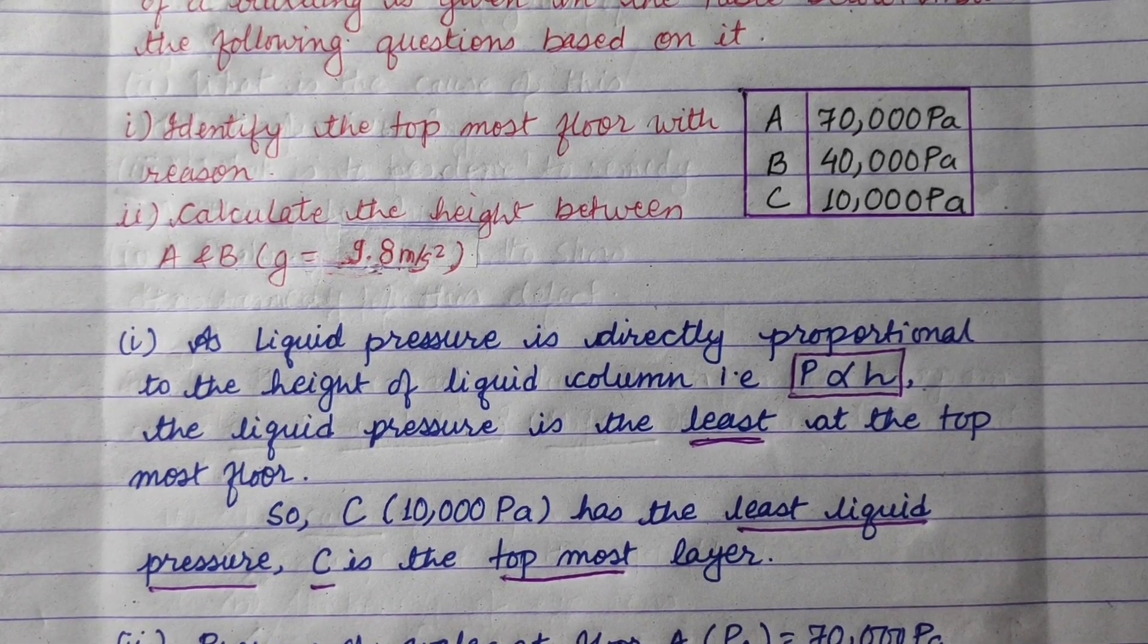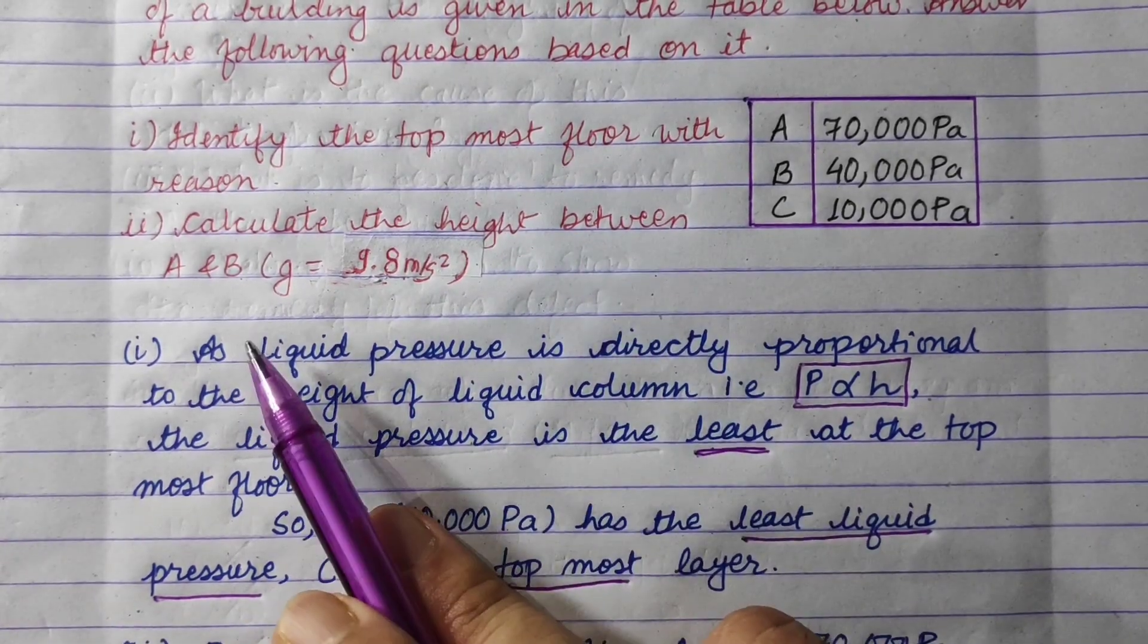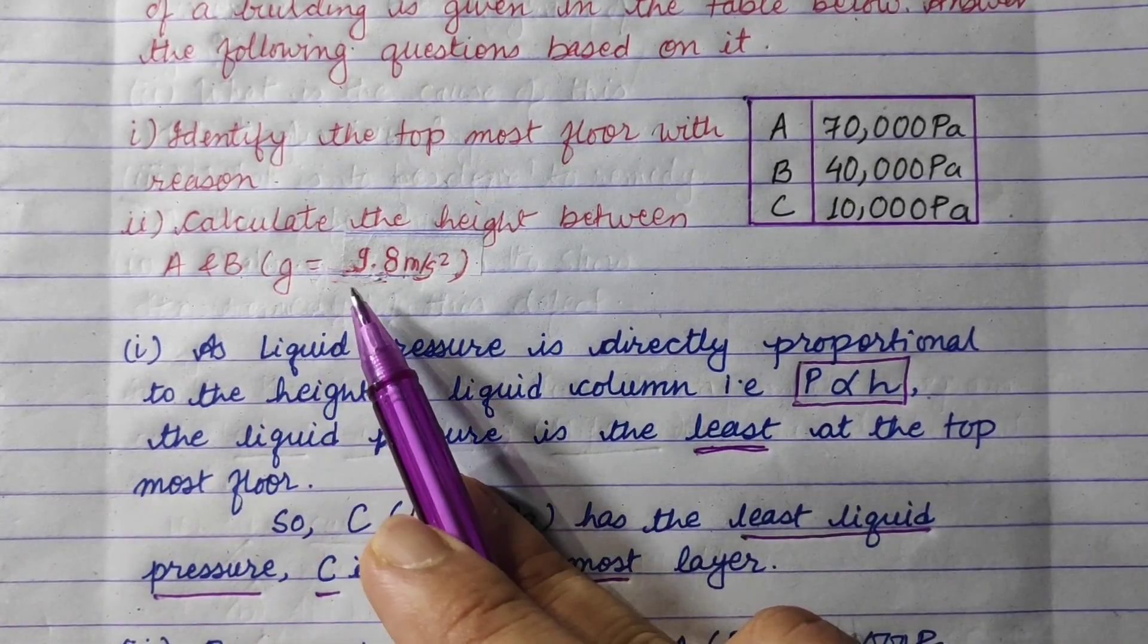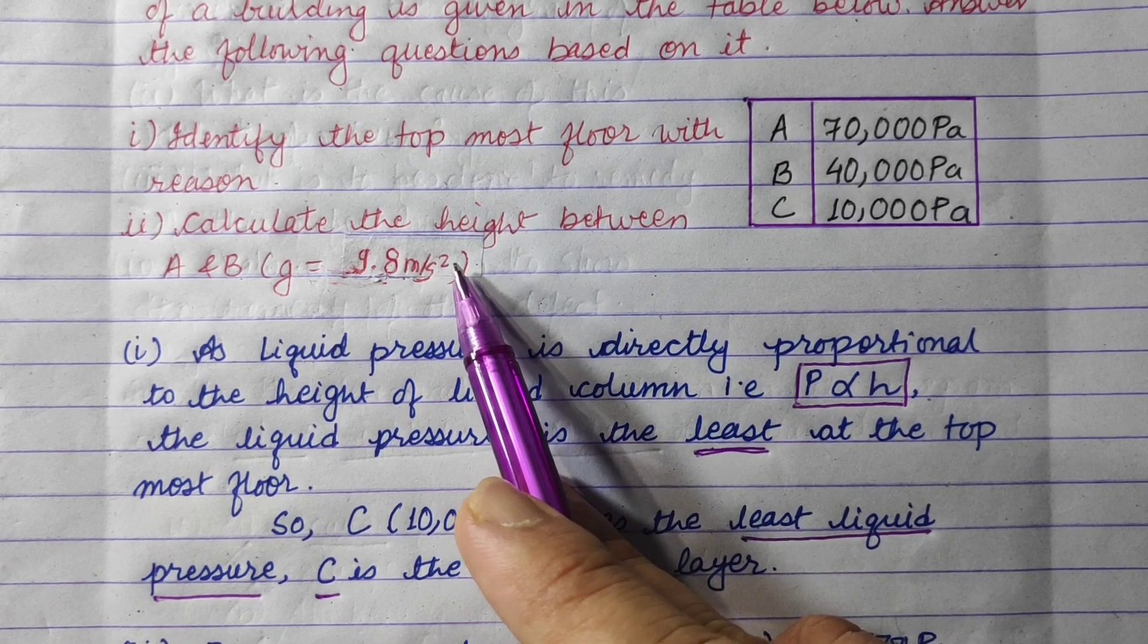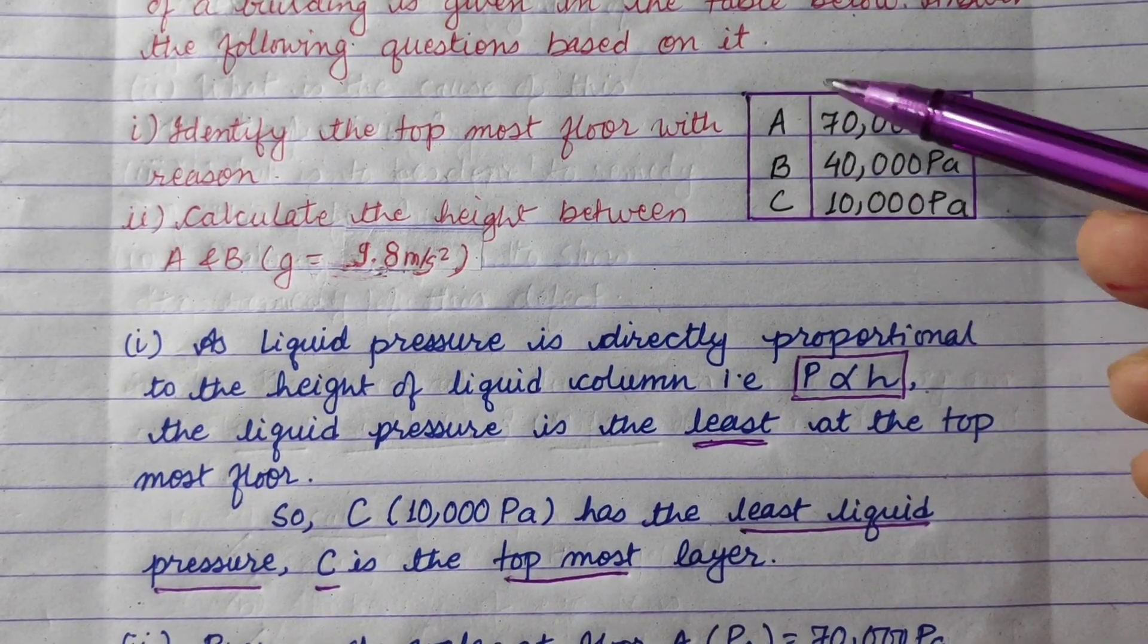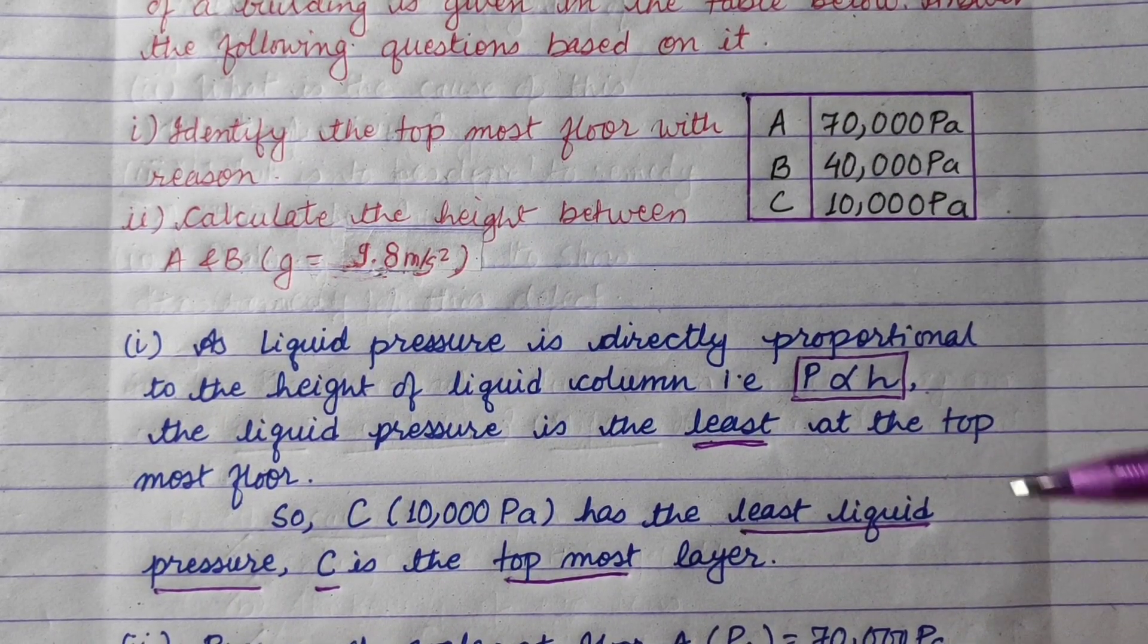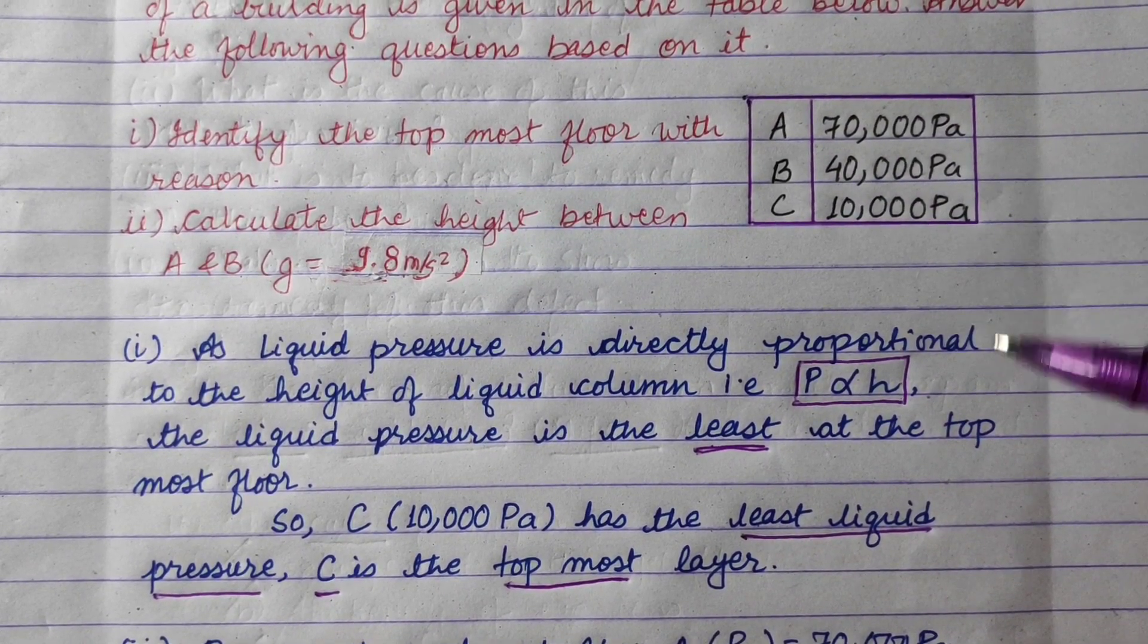Now second part. Calculate the height between A and B where G is 9.8 meter per second square. So between floor A and floor B, what is the height? We can calculate that. For this, we need to do it numerically.